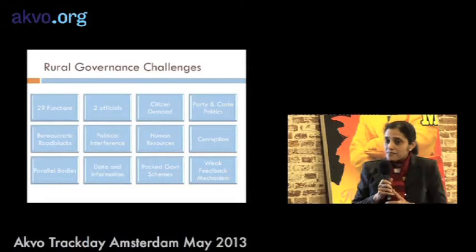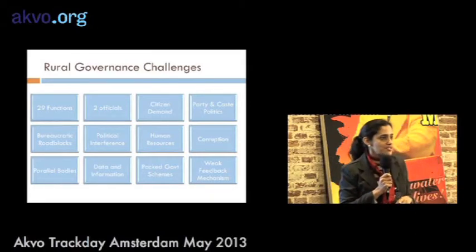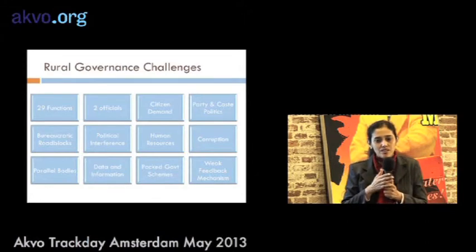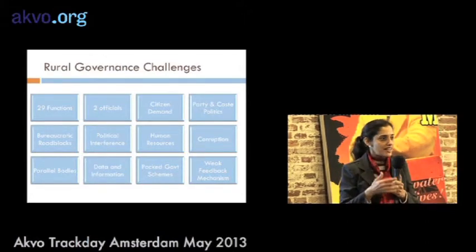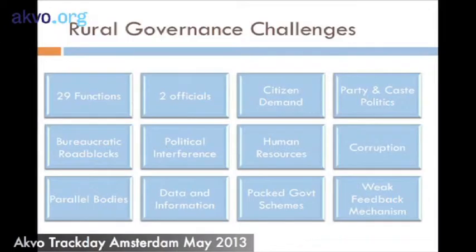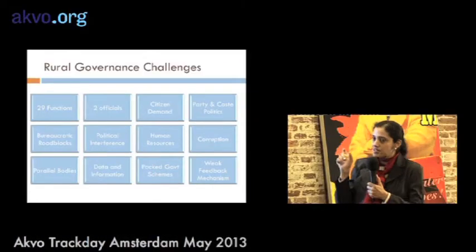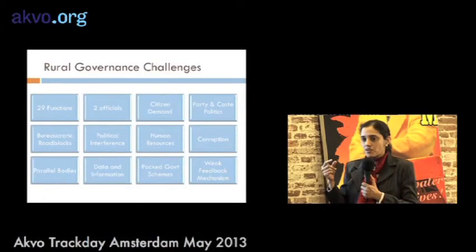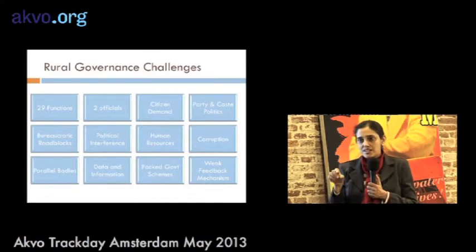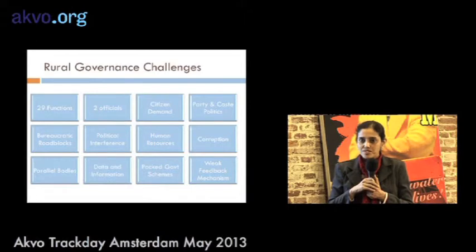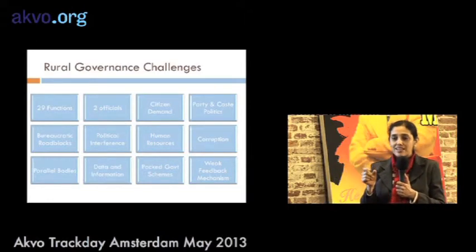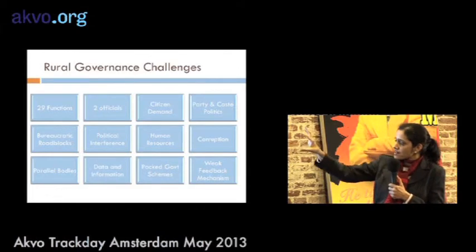The rural governance challenge: there are many issues in governance across sectors — whether you're talking about education, health, livelihoods, or housing — all of them seem to break down at the last mile, and it's a governance problem. The local government fails to deliver the service properly. In India you have three levels of government: the center, the state, and then local governments. The Gram Panchayat is the third tier of government, basically covering a cluster of villages, and that is where a lot of problems arise.